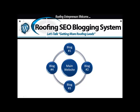One will point back to your main website. Once you get all these working together, Google sees your main website as a priority site. They call it relevant content, and that's how getting on the first page of Google is done. Now I'm going to go through some of the setups and show you some of my main websites that I'm using right now with the Roofing SEO Blogging System. Okay, let's start.